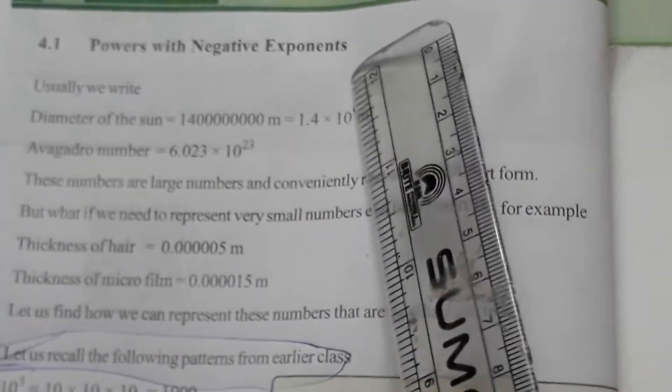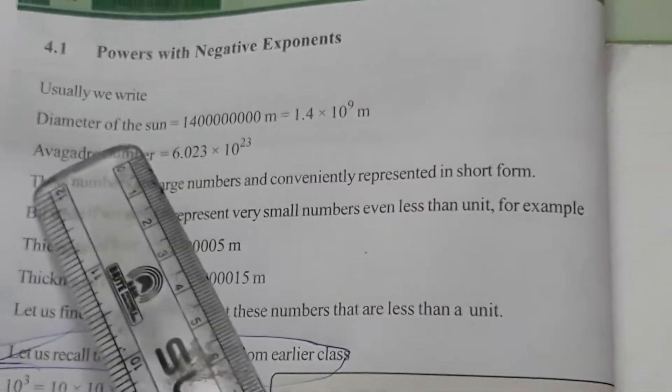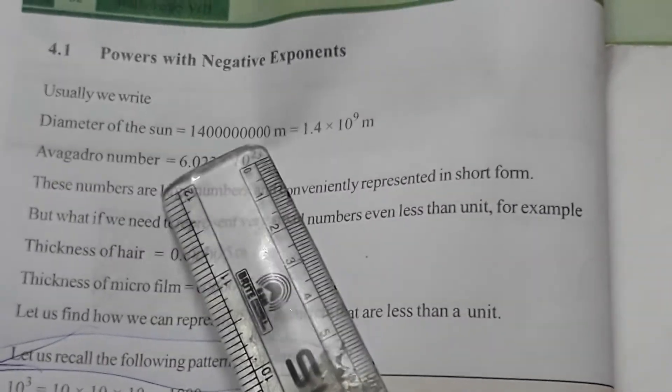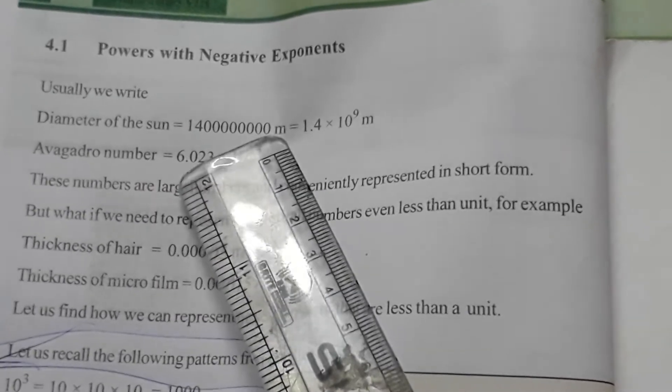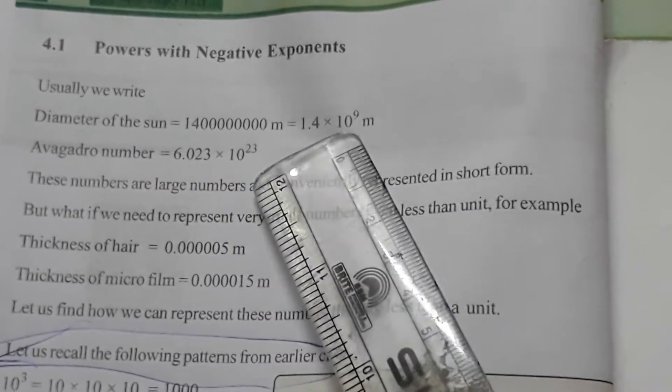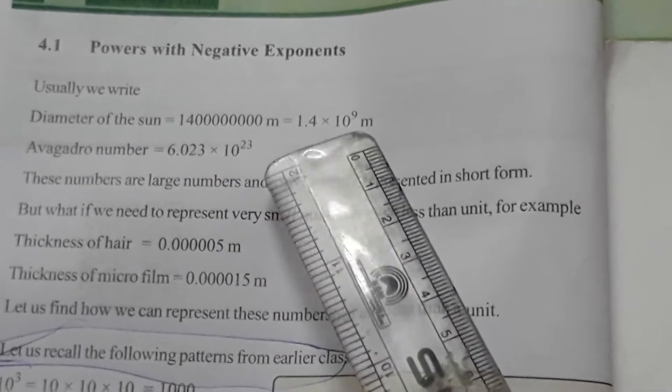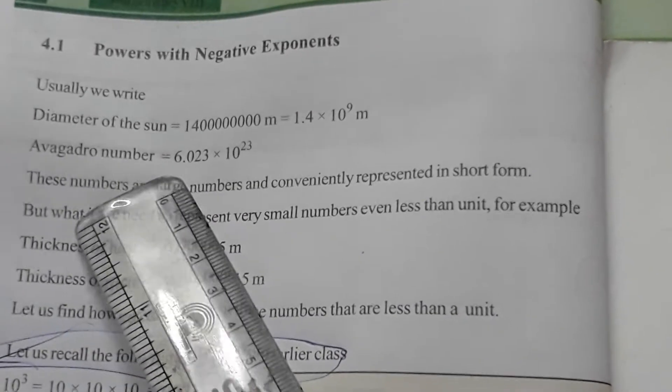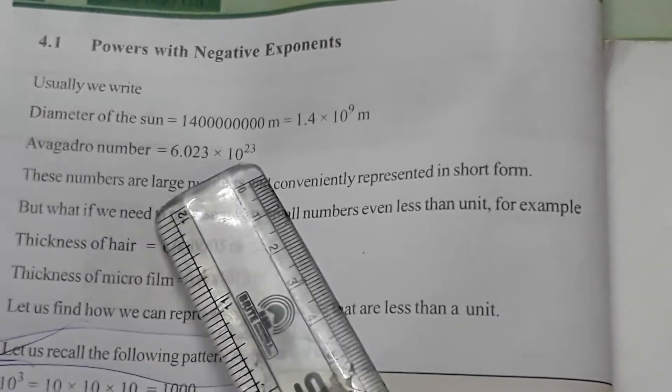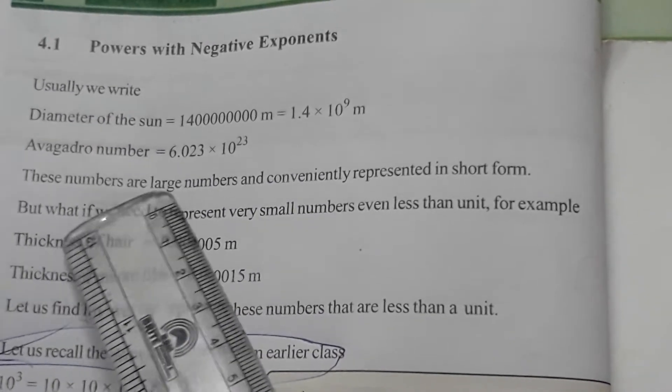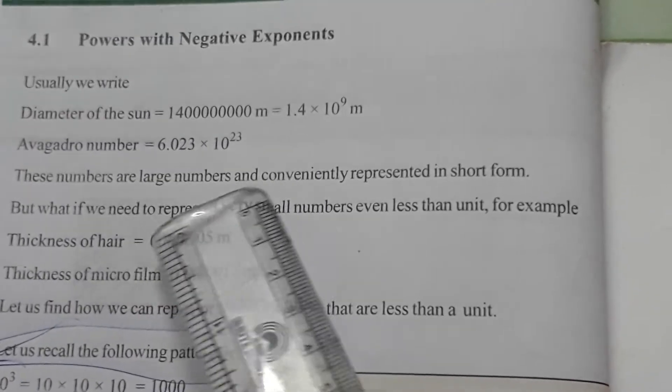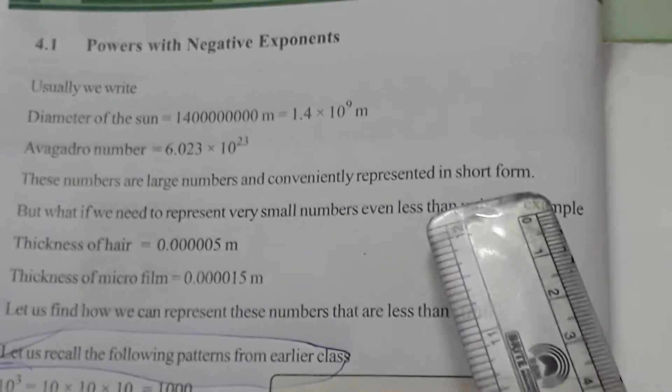Powers with negative exponents. Usually we write, Diameter of the Sun denotes meters. Avogadro number. These numbers are large numbers and conveniently represented in short form.